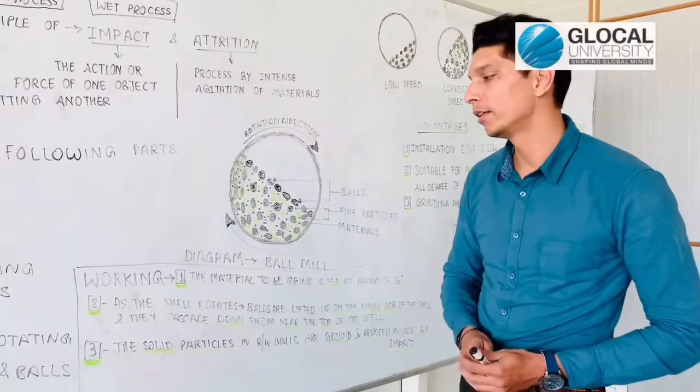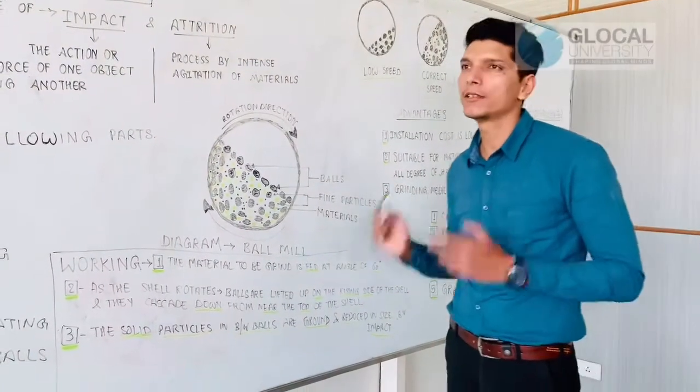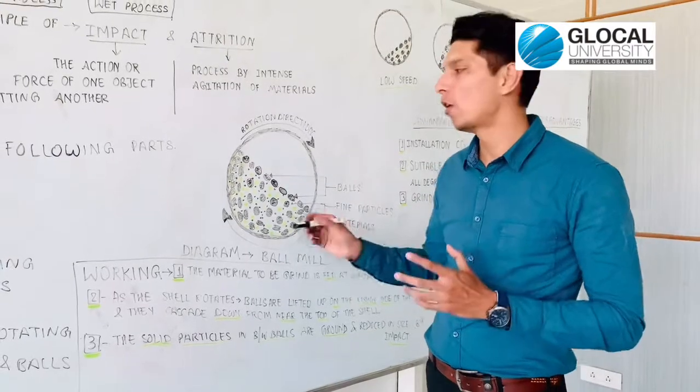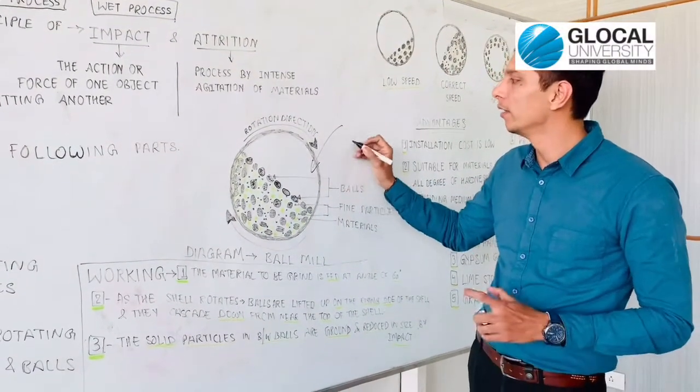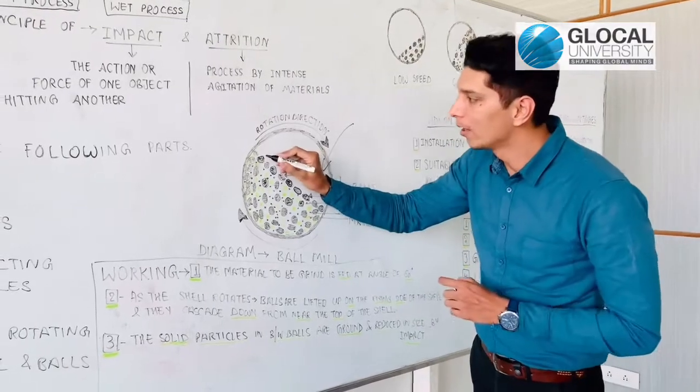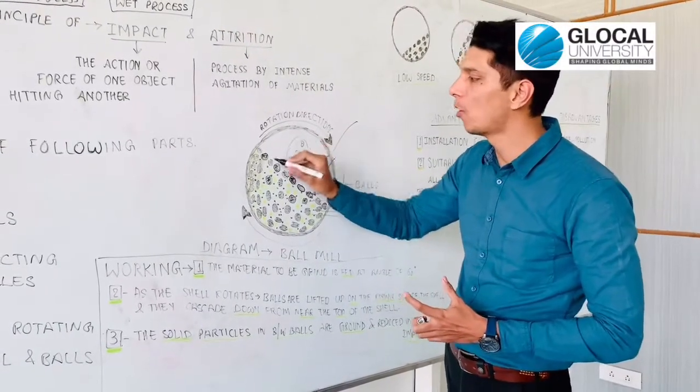Now, its working. The material to be ground is fed at an angle of 60 degrees. The angle is very important in ball mill because when we feed the material, at 60 degrees the ball will fall on the material.